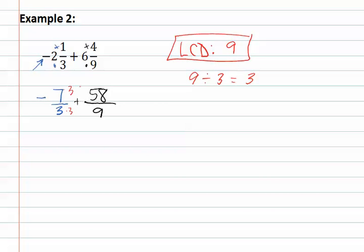This means we multiply the numerator and denominator of the first fraction by 3, giving us negative 21 ninths plus 58 ninths. Now, when we add these together, we get 37 ninths.